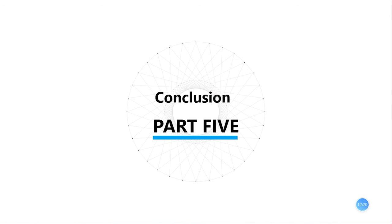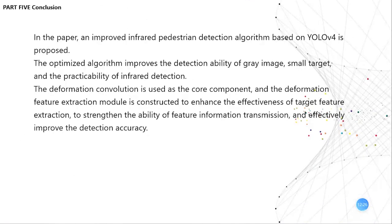Now I will talk about the last part: Conclusion. In this paper, an improved infrared pedestrian detection algorithm based on YOLO V4 is proposed. The optimized algorithm improves the detection ability for small infrared targets and the practicability of infrared detection. Deformable convolution is used as the core component. The deformable feature extraction module is constructed to enhance the effectiveness of target feature extraction, to strengthen the ability of feature information transmission, and to effectively improve detection accuracy.